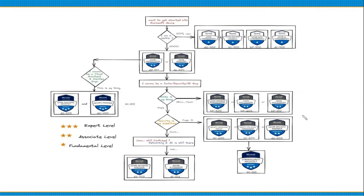Once you have completed the associate-level certifications and want security expertise, there is Azure Security Operations Analyst, which is SC-200, Identity Access Administrator, and Azure Security Engineer, which is AZ-500. I would recommend getting the Security, Compliance and Identity Fundamentals certificate first before pursuing these. If you come from a networking background, you have Azure Network Engineer, which is AZ-700, and for AI professionals, there is AI-102.